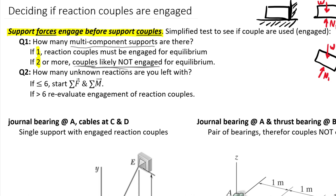The key test comes down to how many unknowns you're left with. We only have six equations. If by getting rid of those couples you have equal to or less than six unknowns, you're likely ready to start summing forces and moments. If you have greater than six unknowns, you likely need to get rid of more couples or may have misinterpreted one of the supports. If you have more than six unknowns, go back to your free body diagram and reevaluate — you cannot solve for more than six unknowns with our statics equations.